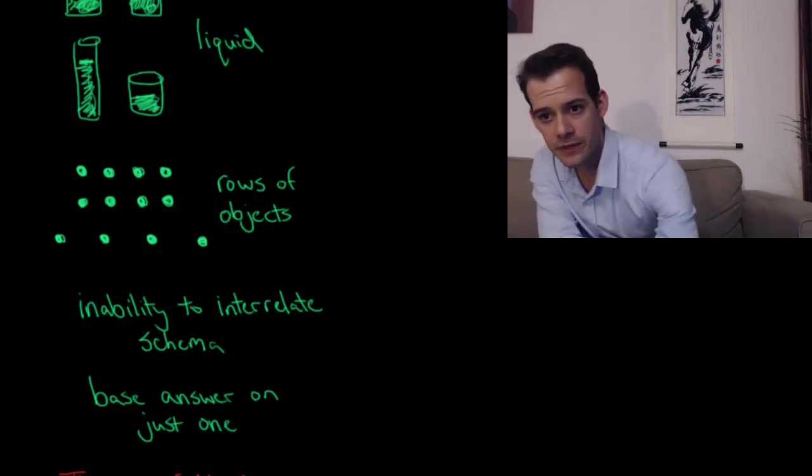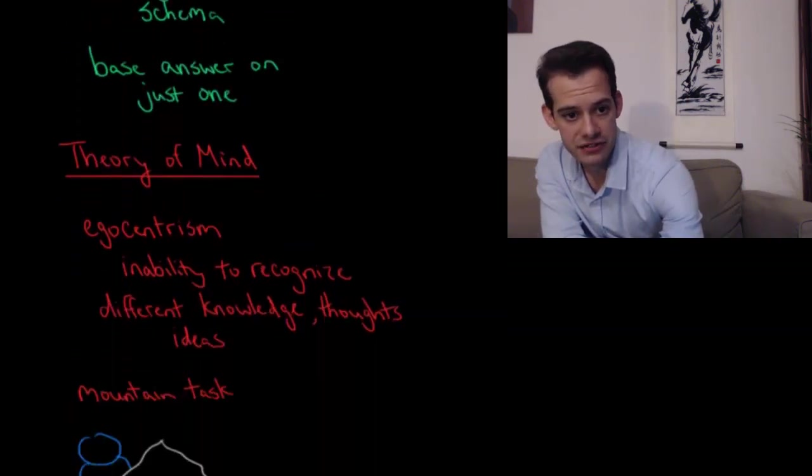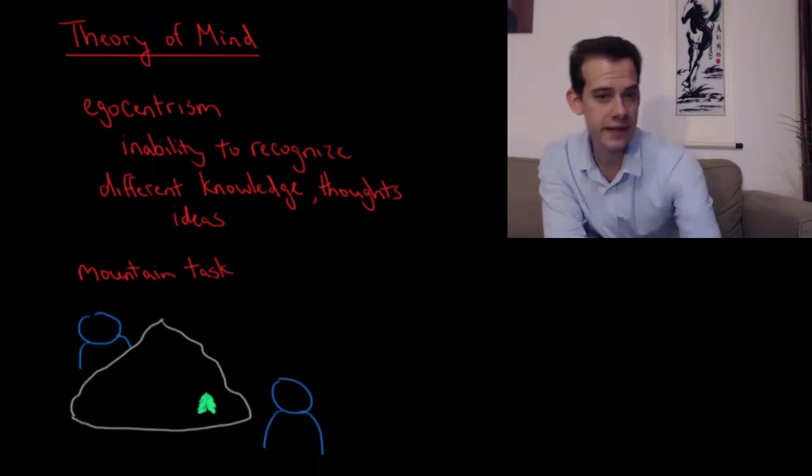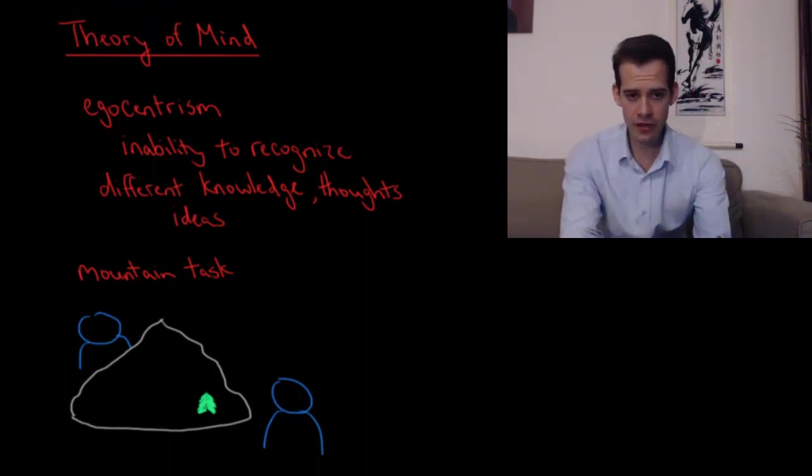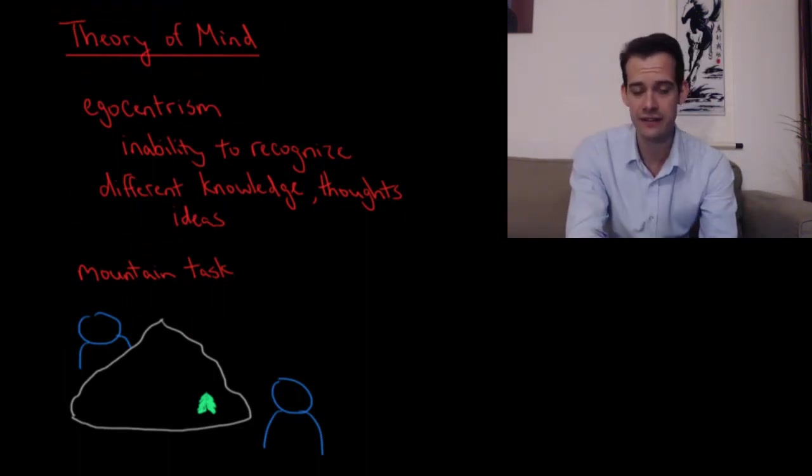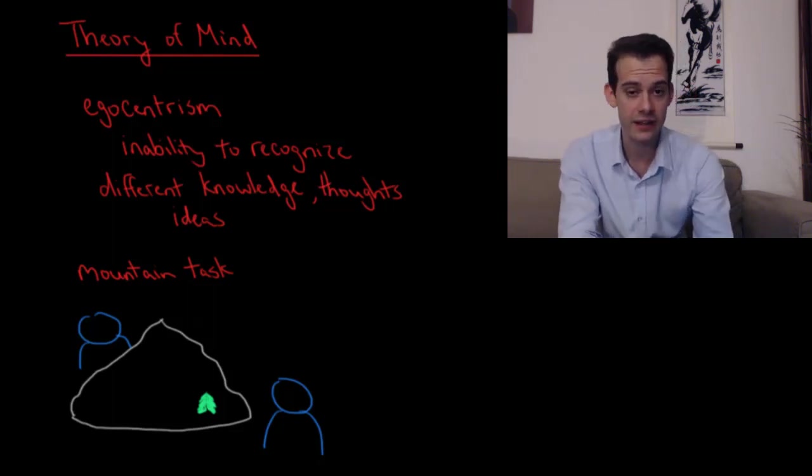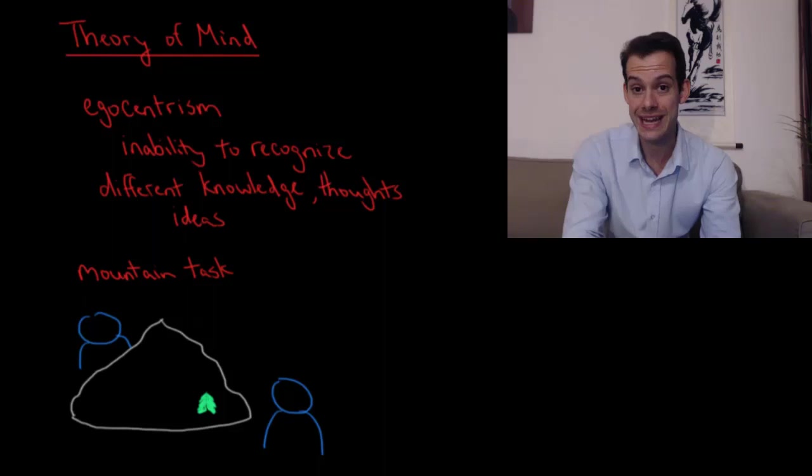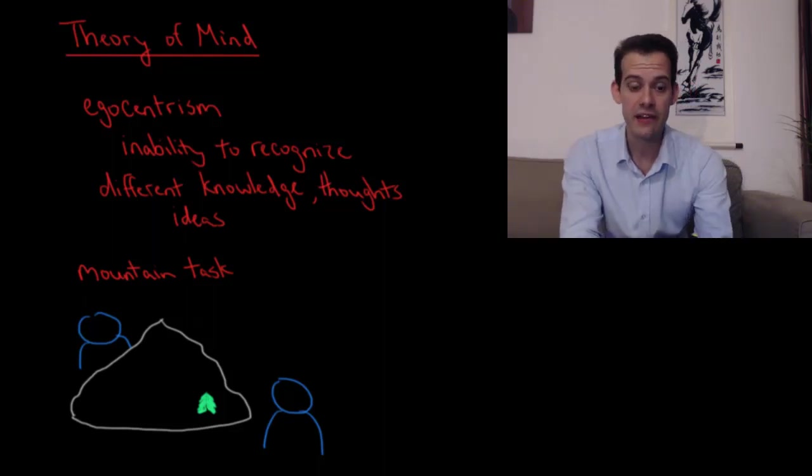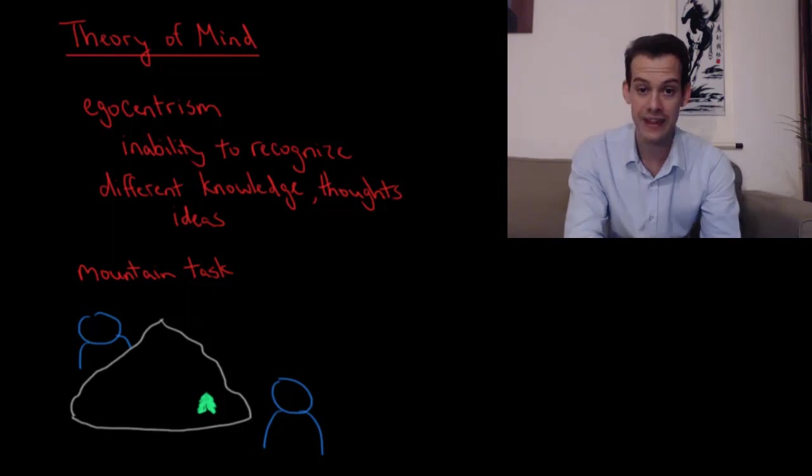Another concept related to this pre-operational stage is the idea of theory of mind. During this stage children are beginning to develop a theory of mind, which means they are beginning to recognize that different people have different minds and those different minds can have different ideas. Piaget thought that during this stage children show egocentrism, and this means they are not able to recognize that other people have different knowledge about the world, they have different thoughts, they have different ideas, different motivations.